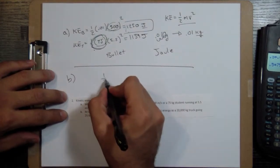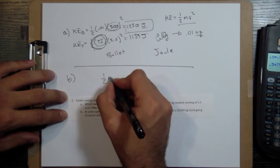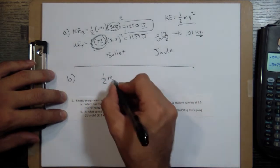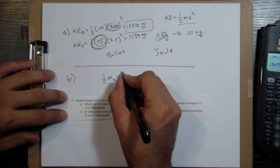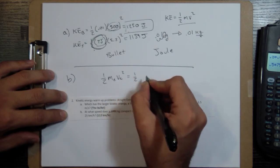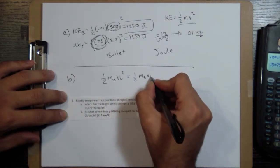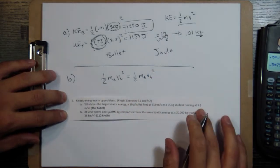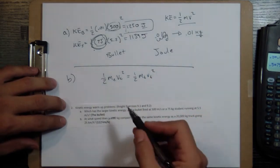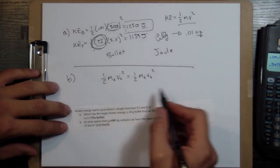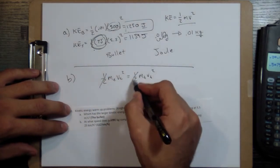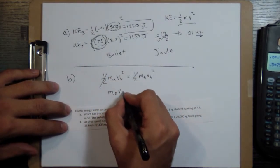So I'm going to write 0.5 mass of the car times velocity of the car squared is equal to 0.5 mass of the truck times velocity of the truck squared. And then fill in the numbers. So first off, half is going to cancel out with half. So that's nice.